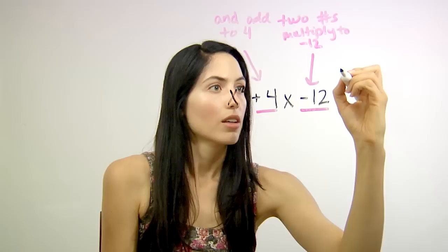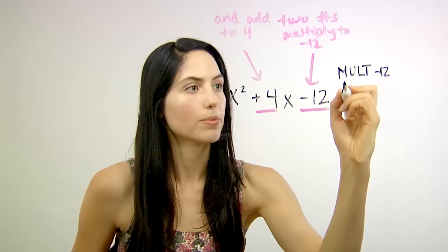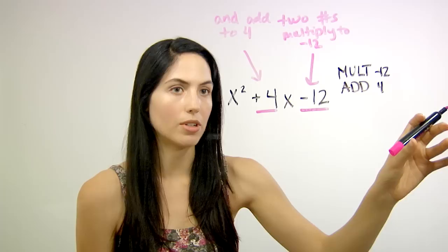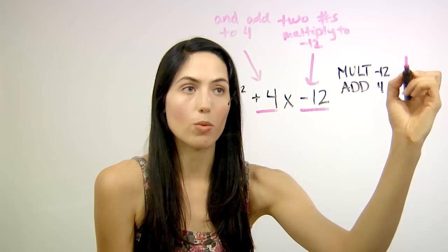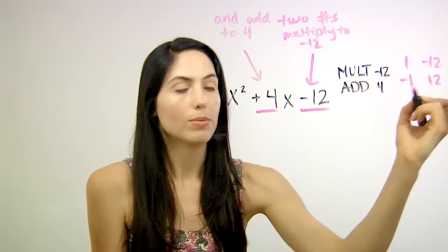So first, think of all the numbers, all the pairs of numbers that would multiply to negative 12, and list them in a column over here. List all your options, and you can rule them out later. So what pairs of numbers multiply to negative 12? We could have 1 and negative 12. That would give you a product of negative 12. You can flip the signs to negative 1 and 12.